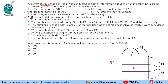The number of schools with only F1, only F2, only F3, and only F4 is 25, 30, 26, and 20 respectively. So we fill in 25, 30, 26, and 20 in the corresponding exclusive regions of the Venn diagram.